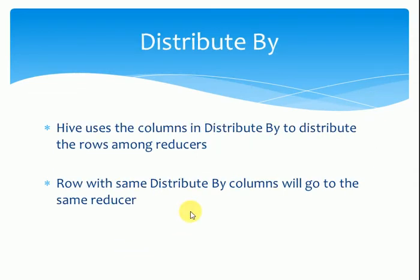For DISTRIBUTE BY, Hive uses the columns in DISTRIBUTE BY to distribute rows among reducers. All rows with the same DISTRIBUTE BY column values will go to the same reducer. This means n reducers get non-overlapping ranges of columns, but it does not sort the output of each reducer.